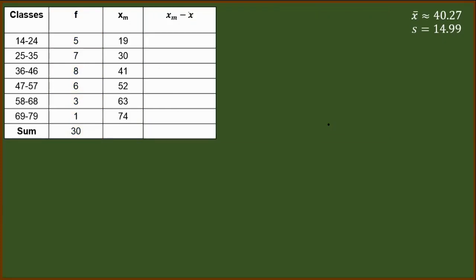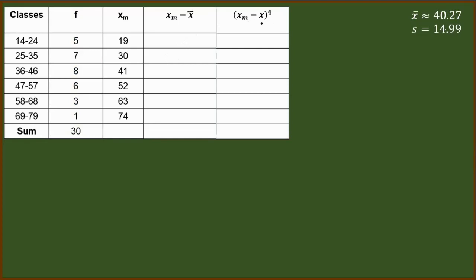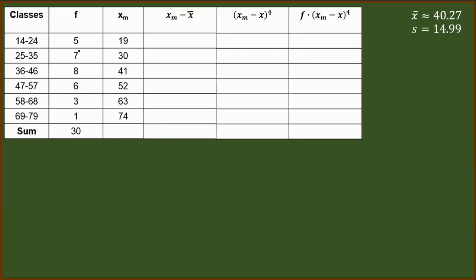And those columns are this one. We have X sub M minus X bar. It means each of the class mark will be subtracted by this mean. Next, whatever the answer here, we will get the fourth power of that. And the answer for this column will be multiplied to the frequency. Afterwards, you will get the sum of all the entries in this last column. And the sum that we will get will be substituted to our formula for kurtosis. Let's begin.